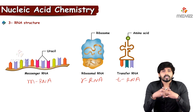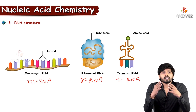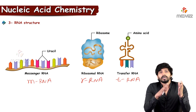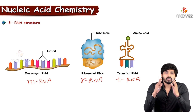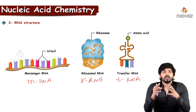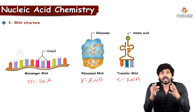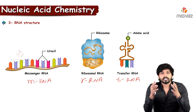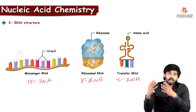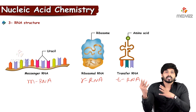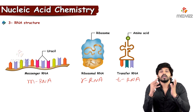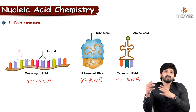With the name itself we can make out: messenger RNA carries a message from DNA to protein, acting as a messenger. Ribosomal RNA — the name itself says ribosomal — ribosomes are where protein synthesis takes place, so ribosomal RNA provides the site for protein synthesis. Third, transfer RNA, or tRNA, carries particular amino acids for protein synthesis based on the message carried from mRNA.